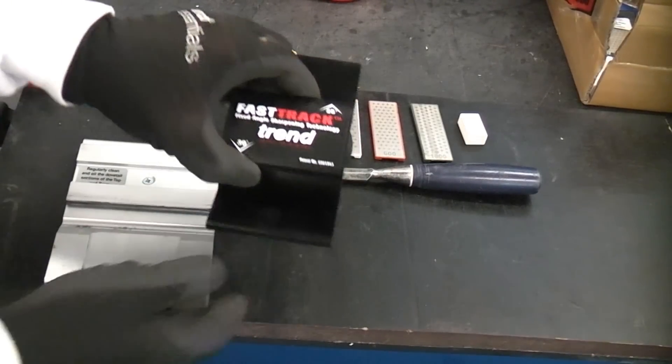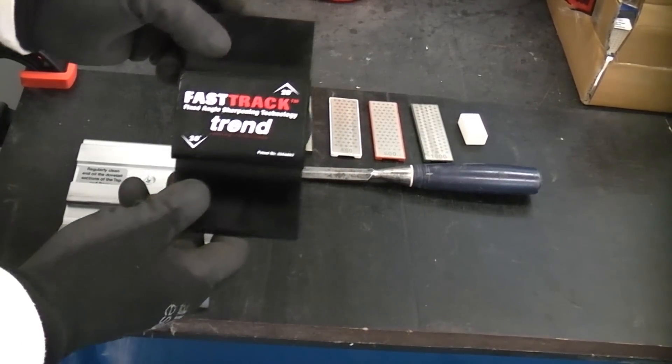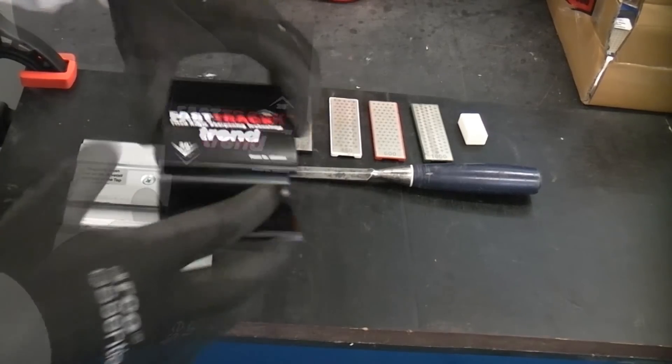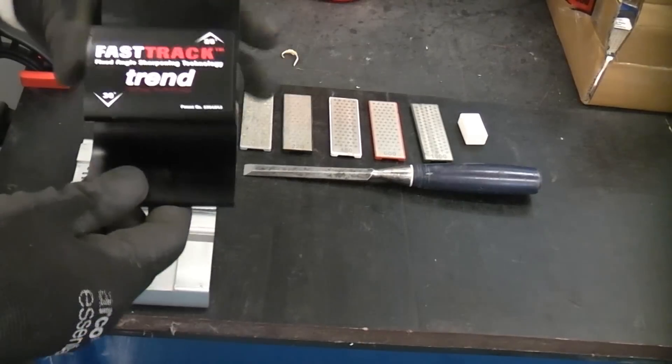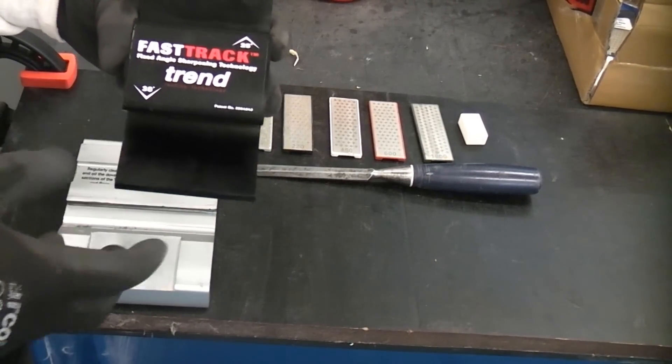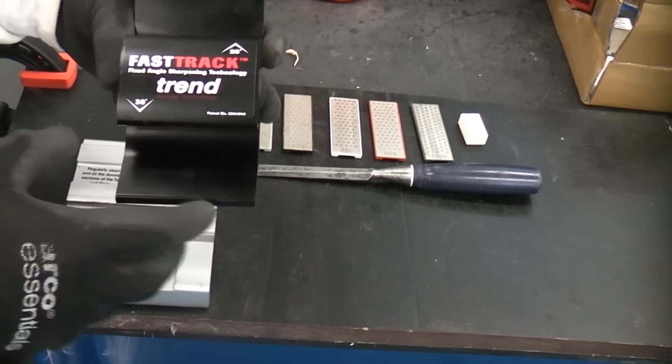This is the Trend Fast Track and this is incredibly useful for sharpening wood chisels and plane irons. If we take a look at this, you'll see that it has a 25 degree side and a 30 degree side. That will give you the two angles that you need when you're sharpening the wood chisel.